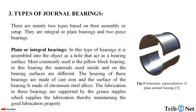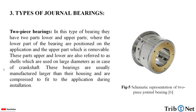The housing of these bearings is made of cast iron and the surface of the bearing is made of chromium steel alloys. The lubrication in these bearings is supported by grease nipples which supply the lubrication, thereby maintaining good lubrication properties. Next, two-piece bearings — in this type of bearing, they have two parts: the lower and the upper parts.